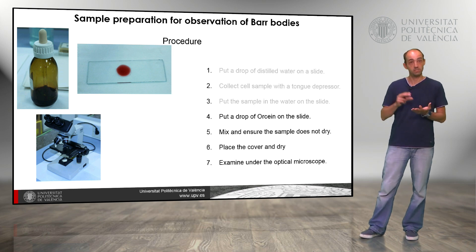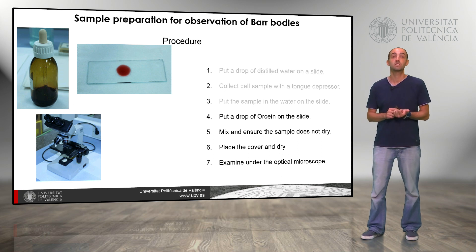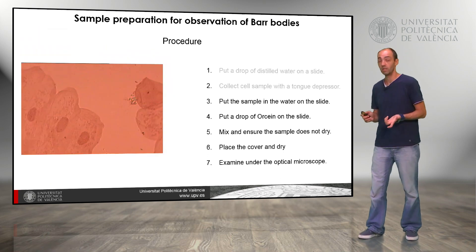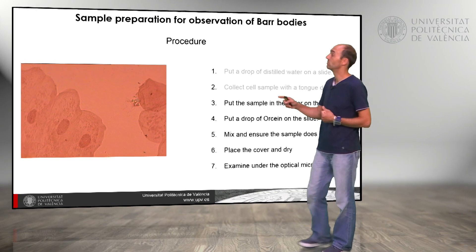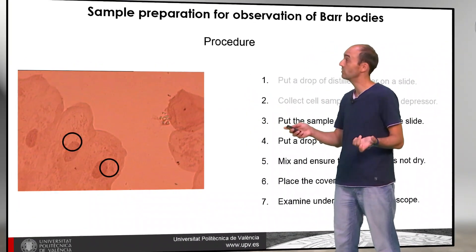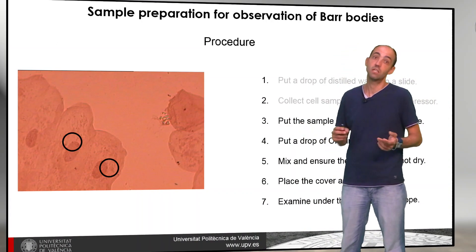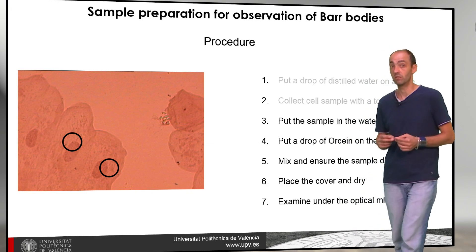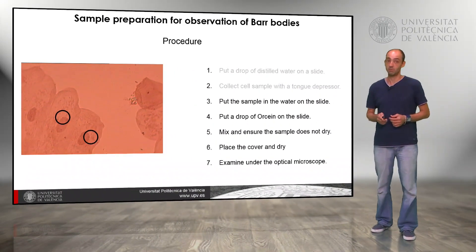After staining, we place the coverslip and dry the preparation, and then we can examine the sample under the optical microscope. Here we have some cells that have been stained, and if we look carefully, we can see the nucleus, and inside the nucleus in some cells we can see the bar bodies. In this case we are talking about a female. If we do not see the bar bodies, we are looking at a male.